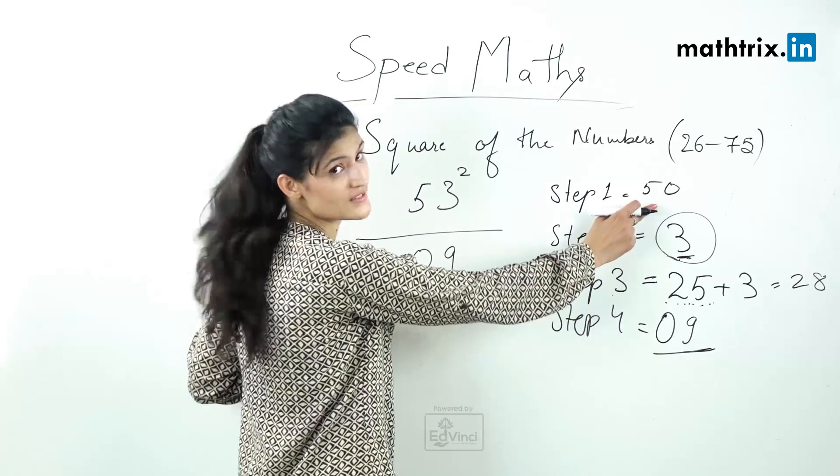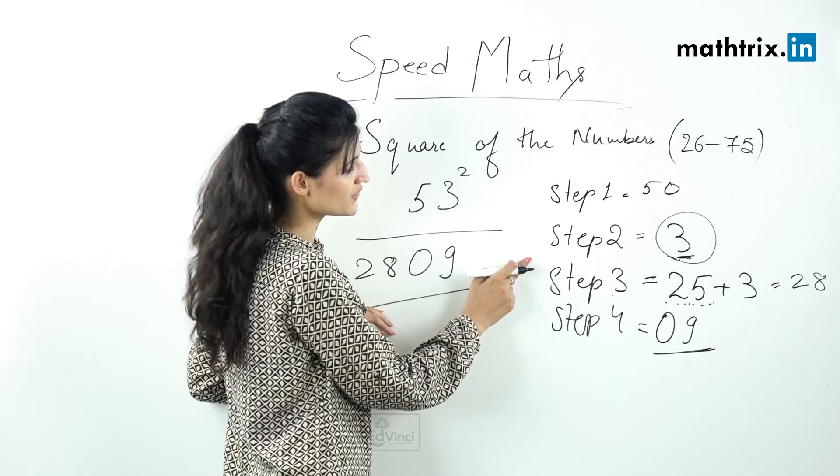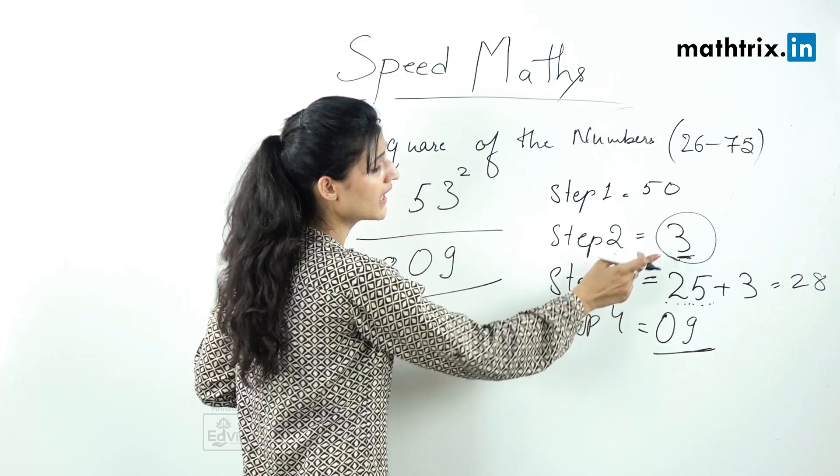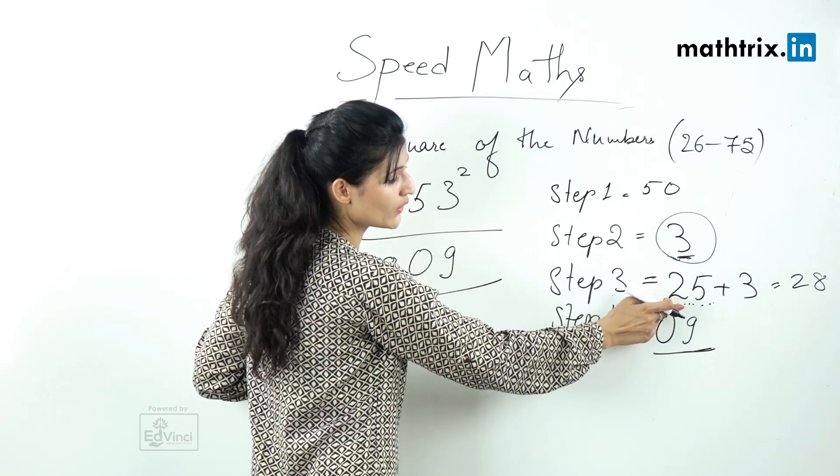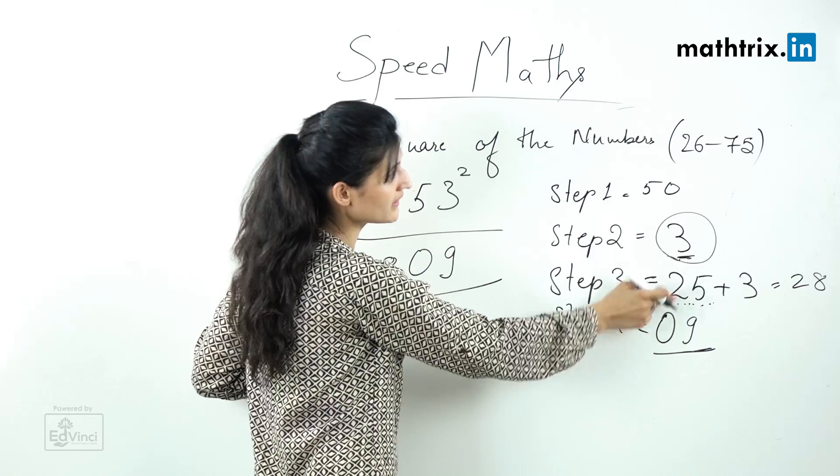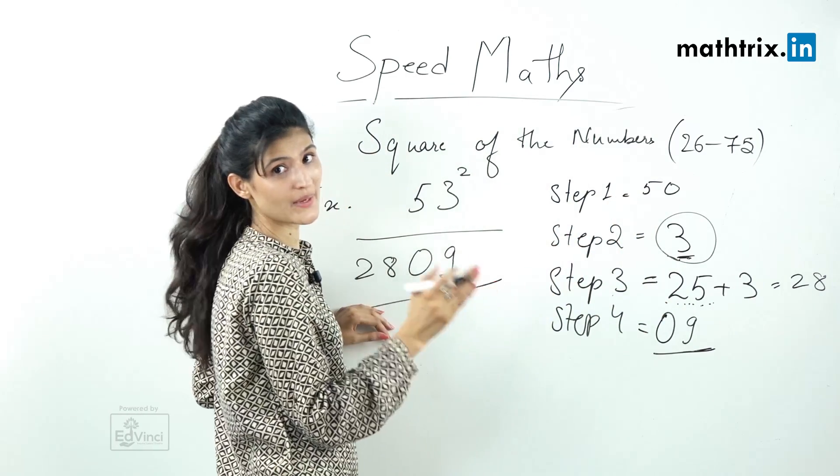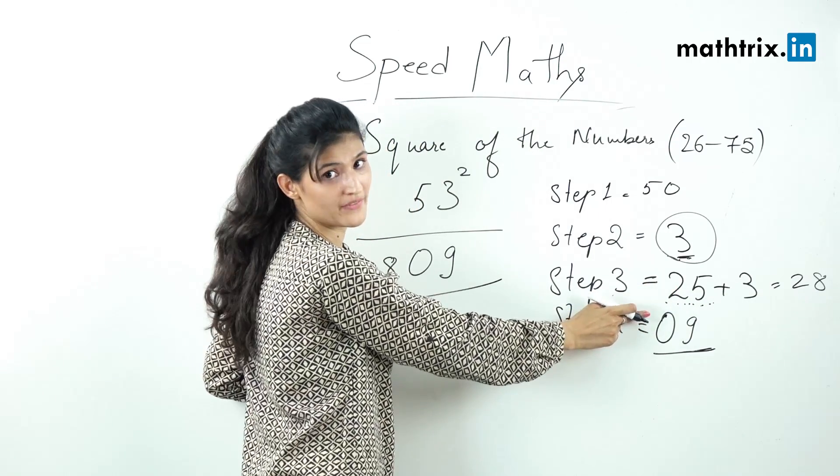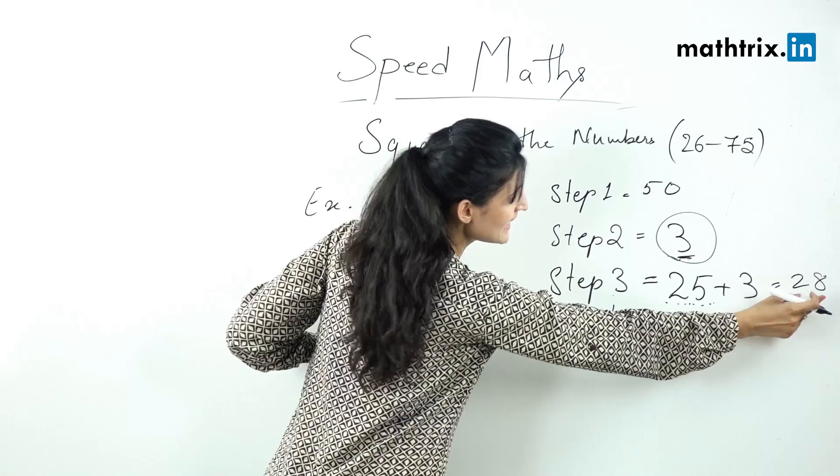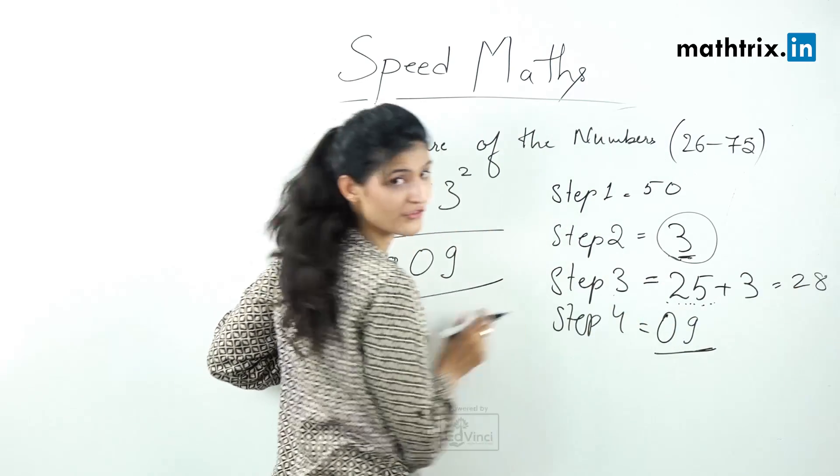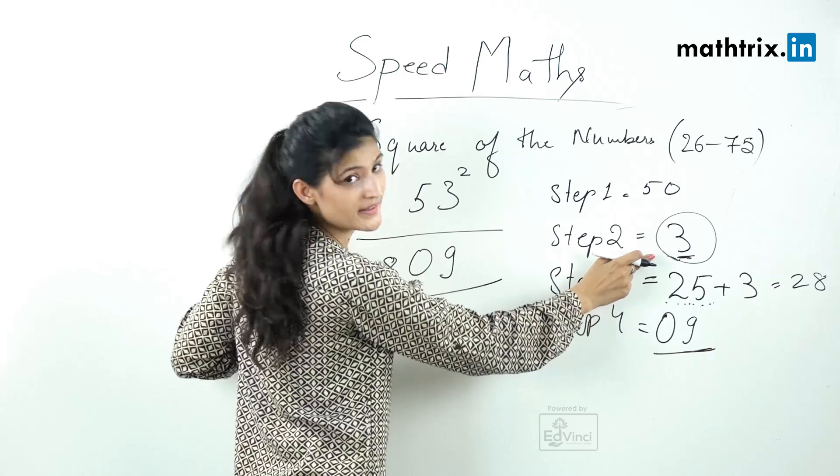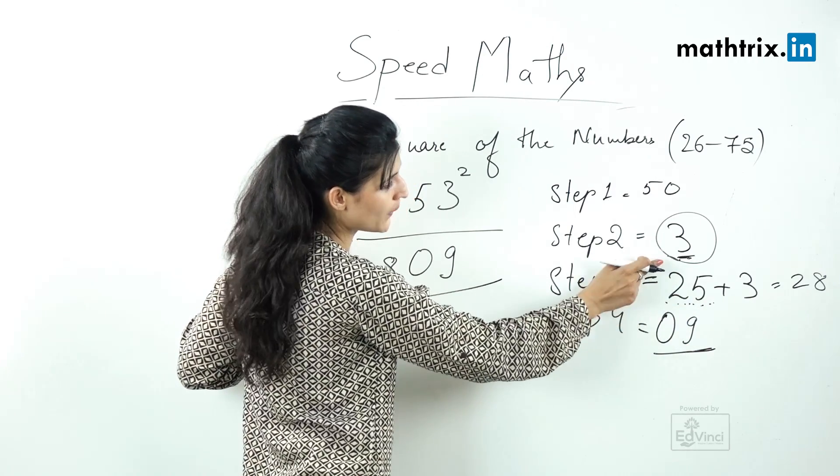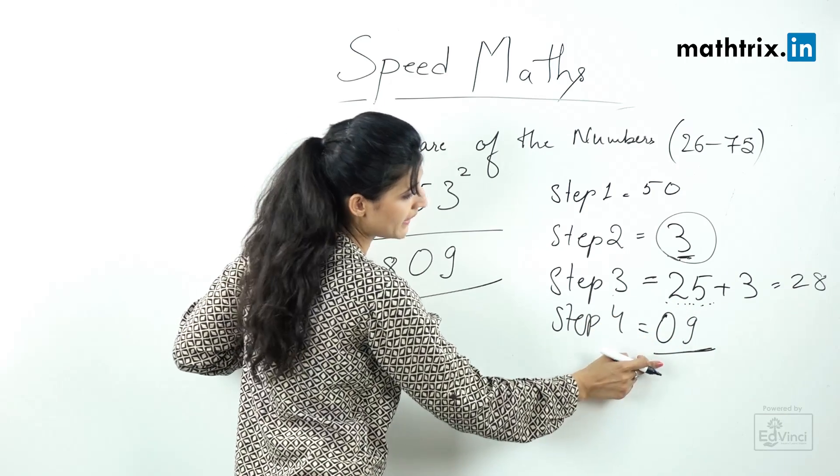Let's do a quick recap of 53 square. Step number one, base is always 50. Step number two, difference between the number and the base which is 3. Step number three is add this difference to a constant value 25. Do remember that whenever we are doing squares from 26 to 75, our constant value is always 25. So add 25 plus 3 which is 28. These are the first two digits of your answer. Step number four, square the difference which is 9. It will give us one digit but we know that squaring this should give us two digits, so our number is 09. So the answer is 2809.